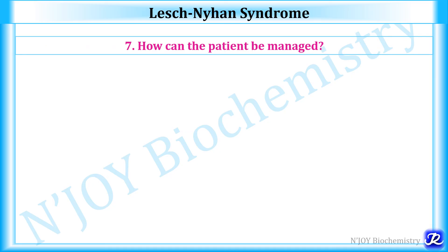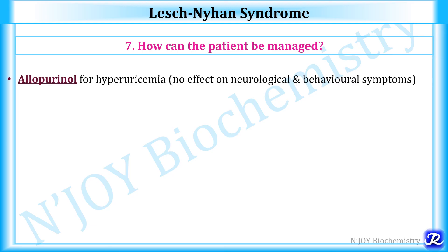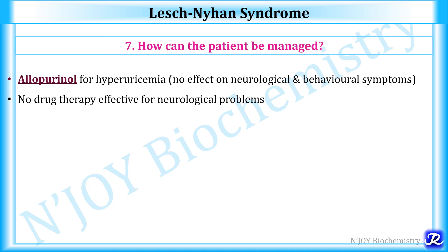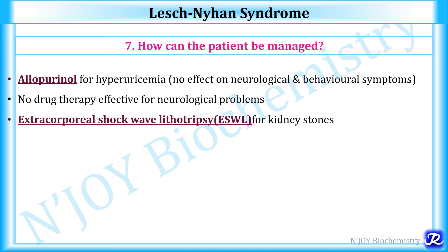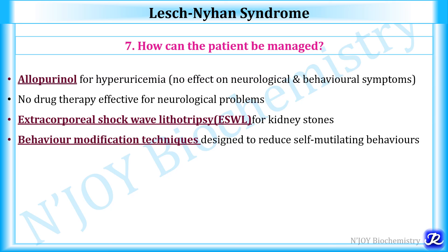For management, allopurinol can be given for hyperuricemia — it inhibits the enzyme xanthine oxidase — but this has no effect on neurological and behavioral symptoms, as those are not due to hyperuricemia. No drug therapy is effective for neurological problems. For kidney stones, extracorporeal shockwave lithotripsy is the treatment option. Behavior modification techniques are designed to reduce self-mutilating behavior. I hope this video on Purine Salvage Pathway and Lesch-Nyhan Syndrome will be useful to you. Thank you for watching and happy learning.